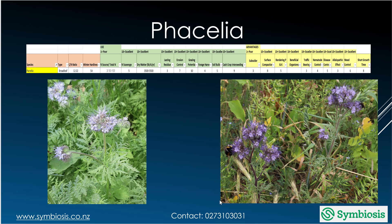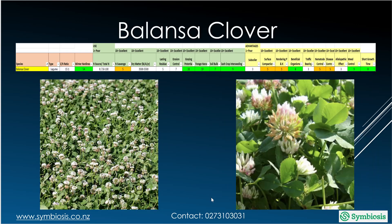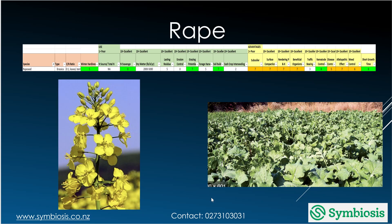Millet is good at scavenging nitrogen, good for grazing, and good for beneficial organisms as well. Rape is good at scavenging nitrogen, good for grazing, good for erosion control, a good subsoiler, good with soil compaction, good for phosphorus and potassium, and reasonably good for beneficial organisms as well.